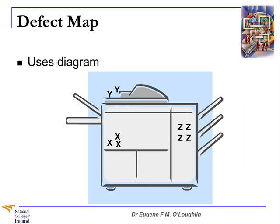The second type of Checksheet is a defect map, where you use a diagram. In this case we have a diagram of a photocopy machine, and on the diagram we mark the location of where defects occur. For example, defects X, Y, and Z are occurring in different places on the photocopy machine. This diagram allows you to record defects not just by how many are occurring, but also by their location on the chart.